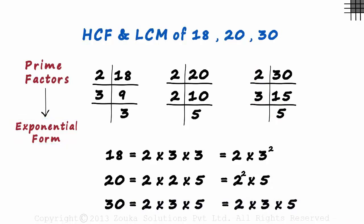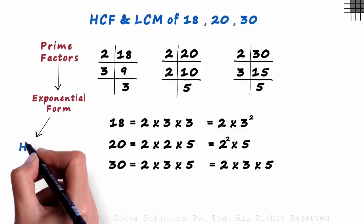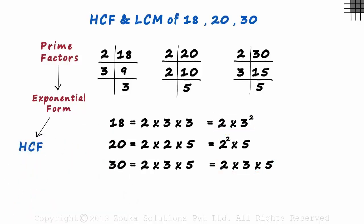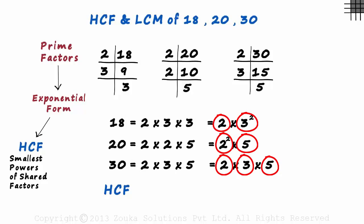Now that we have written all three numbers in exponential form, we can move on to find the HCF and LCM. To find the HCF, we multiply the smallest powers of shared factors. Shared factors are the prime factors that are present in all the numbers. There are three factors to consider: 2, 3 and 5. Out of these, 2 is the only factor present in all the numbers.